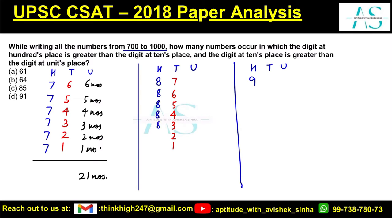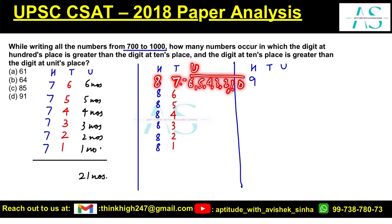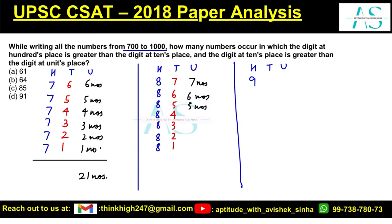Now with 8 at the 100th place, the tens digit can be 7, 6, 5, 4, 3, 2, or 1. With 8 at hundreds and 7 at tens, the unit digit must be less than the tens digit, so we can have 6, 5, 4, 3, 2, 1, or 0 — that's 7 numbers. Continuing: 7, 6, 5, 4, 3, 2, and 1 numbers. Total: 7×8÷2 = 28 numbers.